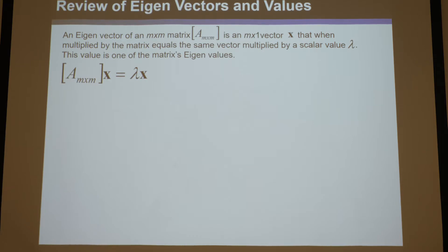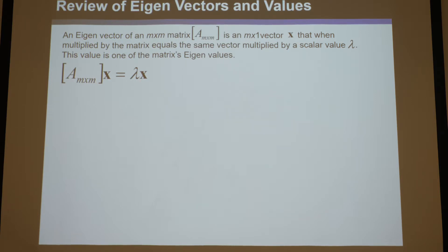By the way, these are in textbooks, these are online, they're easy to understand. Say you have a matrix that is an m by m matrix — a square matrix that has as many rows as columns. If you multiply that matrix A by a vector and you get the same vector times some scalar value, then you have found that matrix's eigenvector and its corresponding eigenvalue, which is lambda — the scalar that multiplied it. That's just the definition.